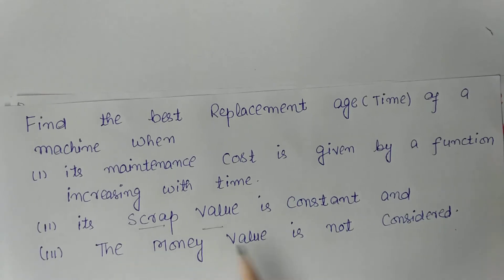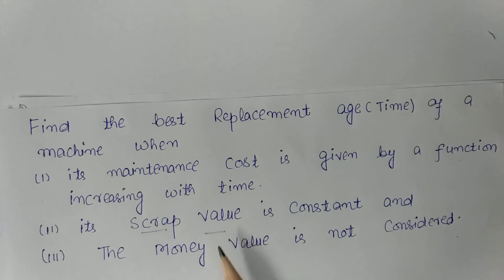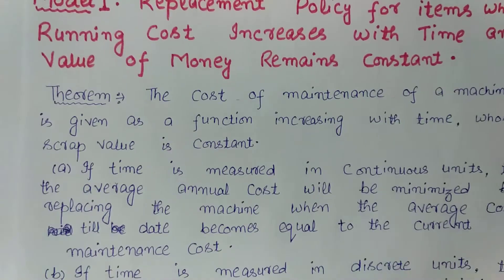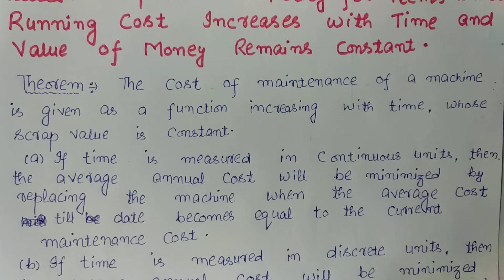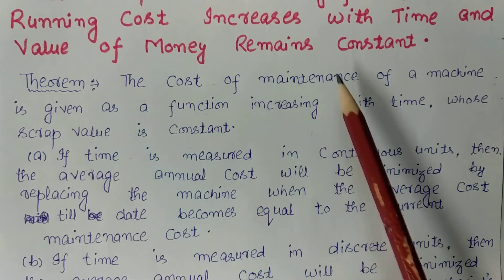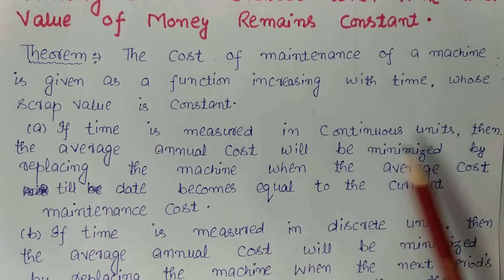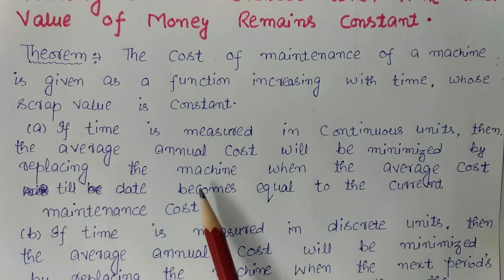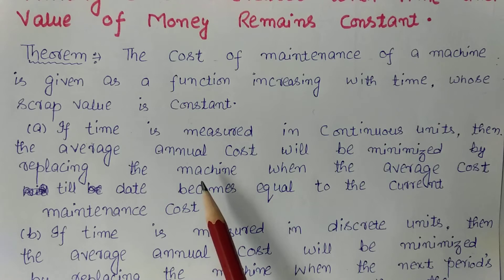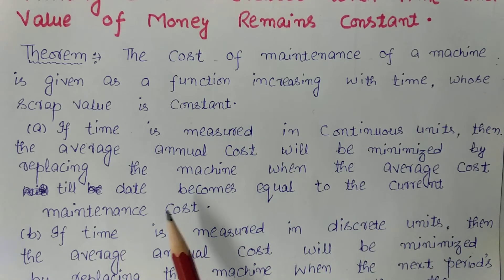The money value is considered to be constant. This question is most often asked in examinations, and sometimes this theorem is asked and you have to prove it. The theorem states: the maintenance cost of a machine is given as a function increasing with time, and its scrap value is constant. If time is measured in continuous units, the average cost will be minimized by replacing the machine when the average cost till date becomes equal to the current maintenance cost.